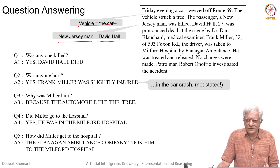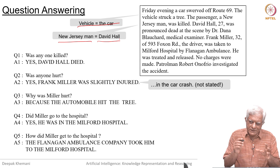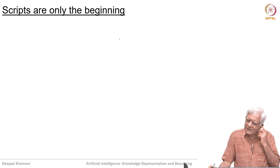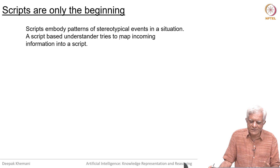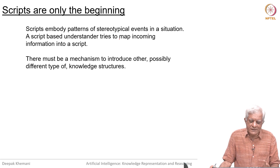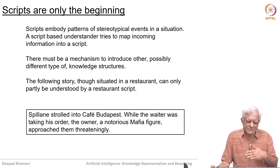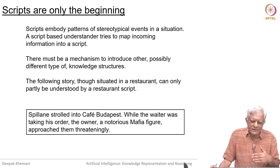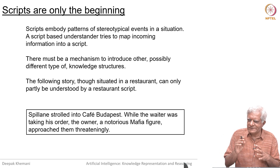Welcome back. We have looked at this notion of scripts and seen a couple of small examples. The last one was the road accident example, and we saw how SAM, which is a script applier mechanism, could answer questions by calling relevant modules. Now, scripts are only the beginning in the sense that not everything we know about the world can be captured using scripts. Scripts embody patterns of stereotypical events in a situation, and a script-based understander tries to map incoming information onto the script — like a large data structure that you are trying to match things into.